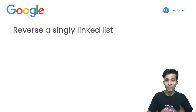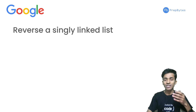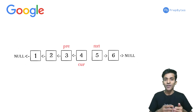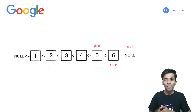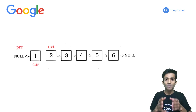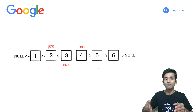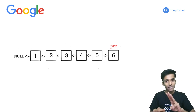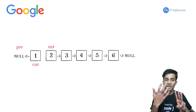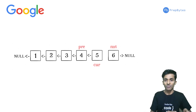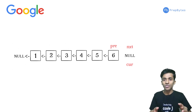The next question is based on linked lists — a commonly asked question at many product-based companies: reverse a singly linked list. This can be achieved using three pointers. One pointer stores the address of the previous node, one stores the address of the current node, and another stores the address of the next node. Starting from the first node as the current node, the idea is to make the current node point to the previous node, then keep moving forward using the next pointer, repeating this across every node in a linear fashion.